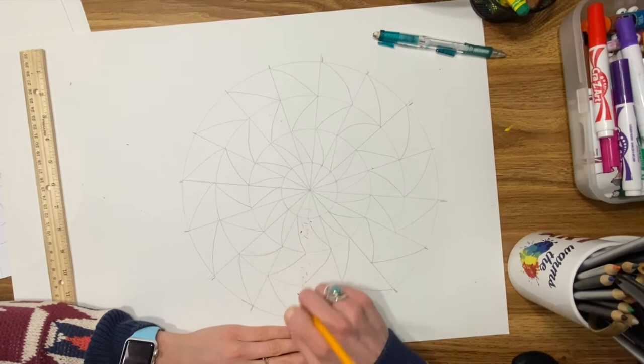Last step is to erase those straight lines that we made with the ruler earlier. This is why drawing lightly with your pencil is important. It will make erasing a lot easier.